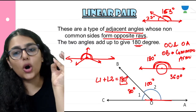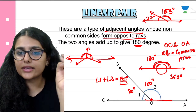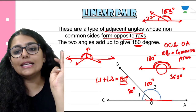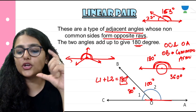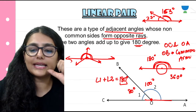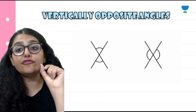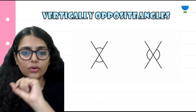So far we have done complementary angles, supplementary angles, adjacent angles, and linear pair — all under the topic of related angles. One last type remains: vertically opposite angles.